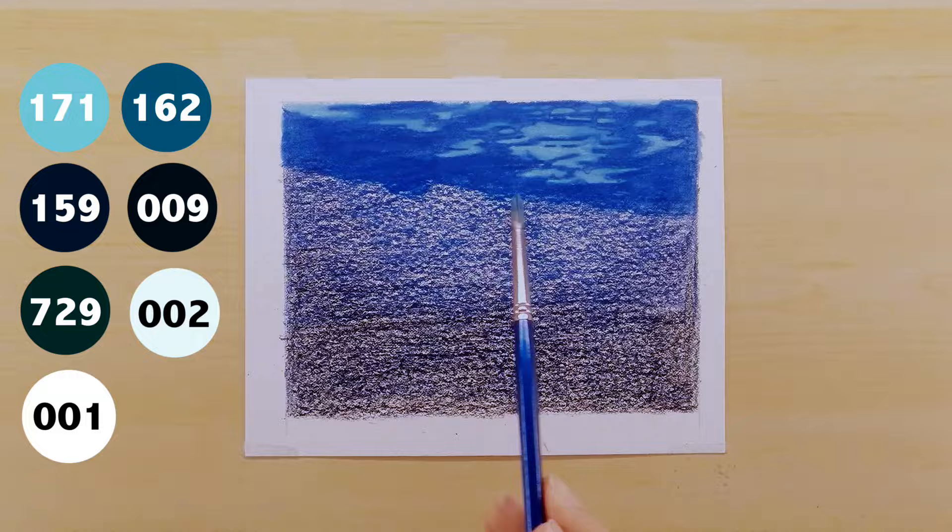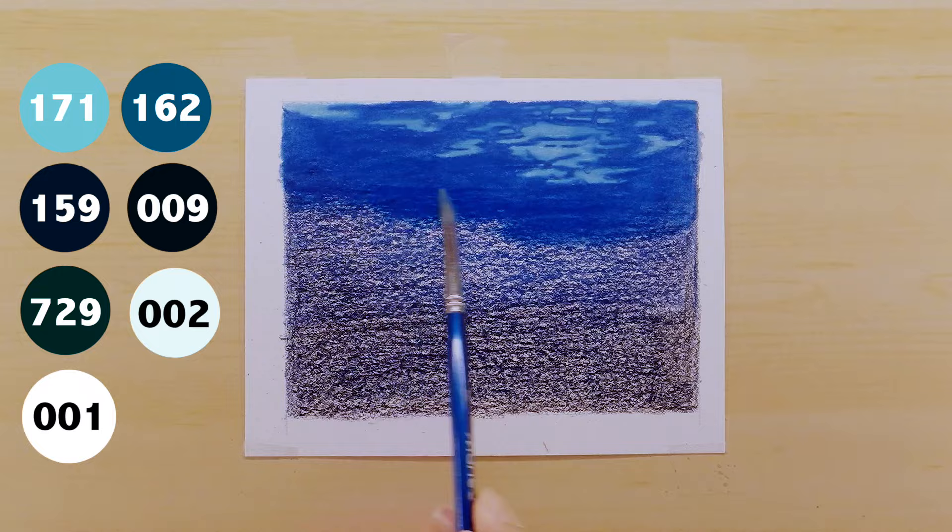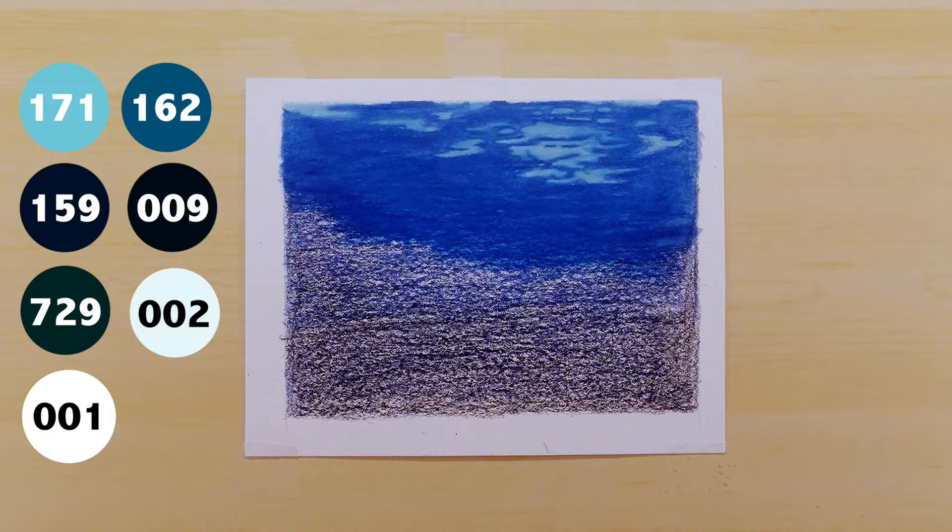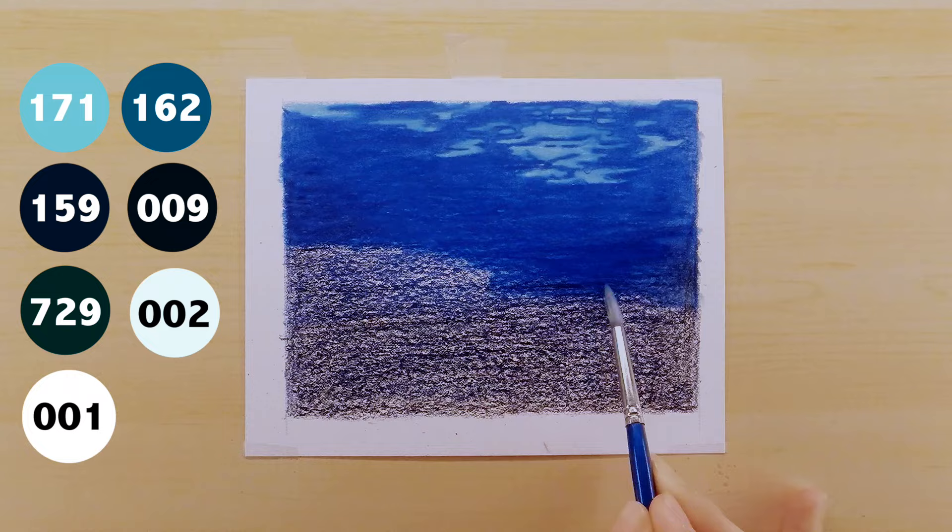When you are blending this out, you really want to stick to the horizontal brush strokes. This is going to help reinforce the texture and the motion of the water. You don't want to create any vertical brush strokes because it will disrupt the flow of the water.